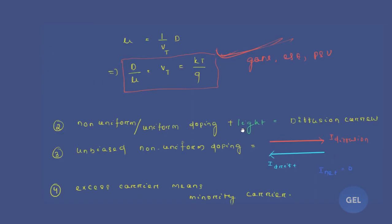Second note: when optical excitation or any light is incident on a uniformly doped or non-uniformly doped semiconductor, the current which is generated is due to the injection of carriers — that is, due to the diffusion process. So diffusion is responsible for the generation current in that case.